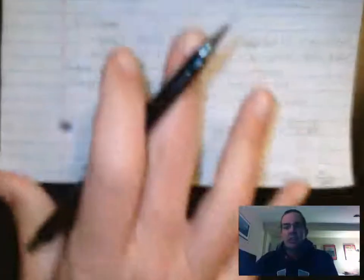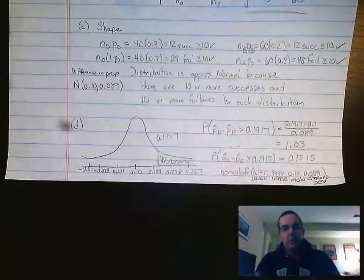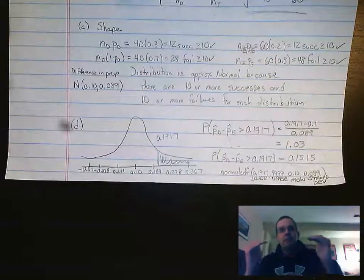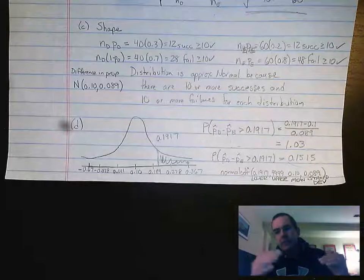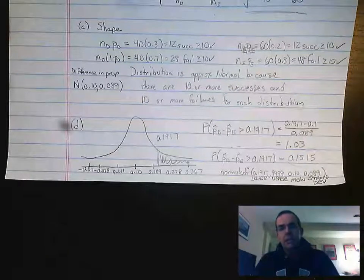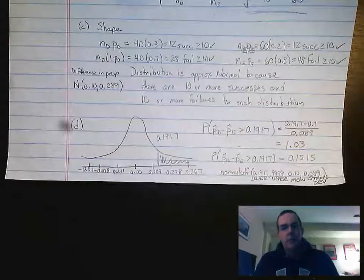This is a really nice complete question when it comes to sampling distributions. It walks you through every step where you're figuring out the center, the mean, the spread, the variability, that standard deviation, the shape - we want it to be normal - and then using our abilities with the normal distribution to answer probability questions.